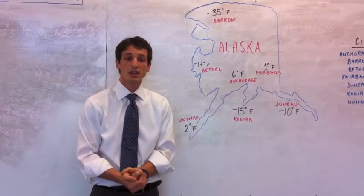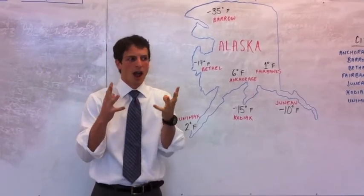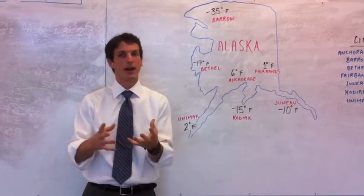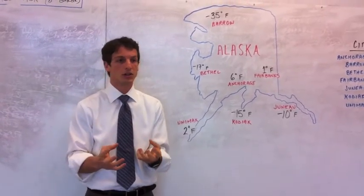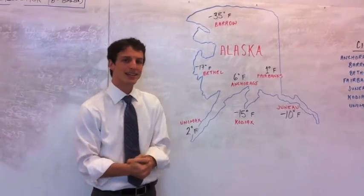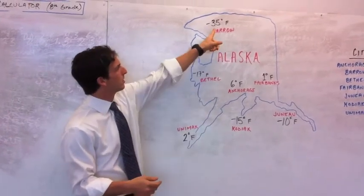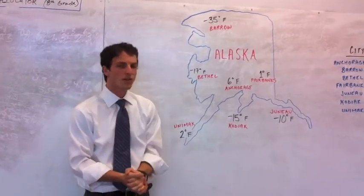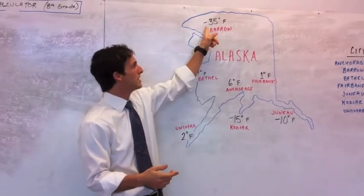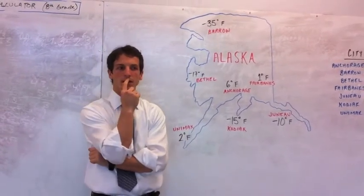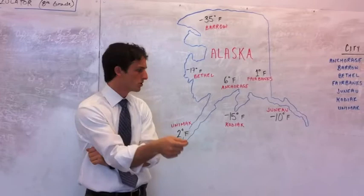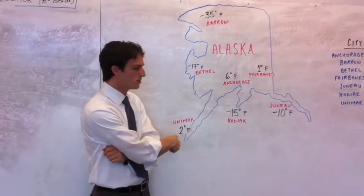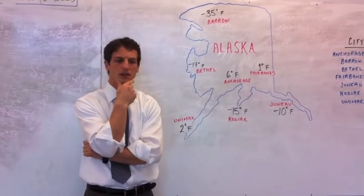Now the way that you can remember how exactly to order an integer, because it can get a little confusing. Look at Barrow up here, 35 degrees, but there's a negative sign in front of it. Is that bigger or smaller than positive 2 degrees Fahrenheit?